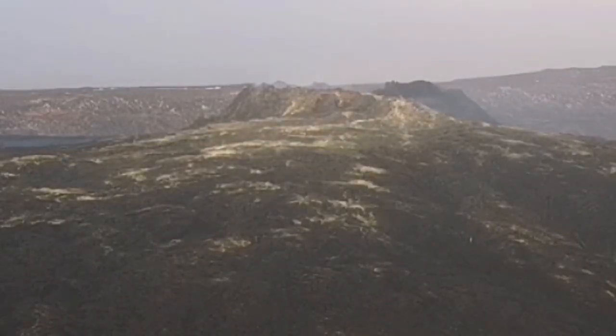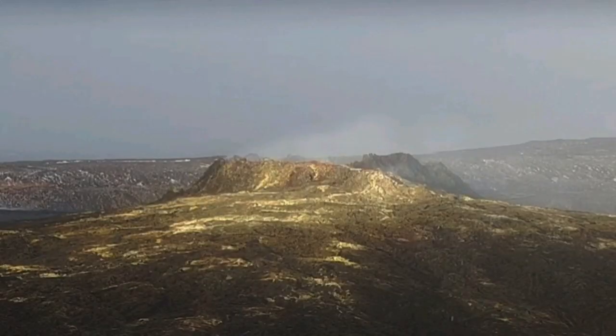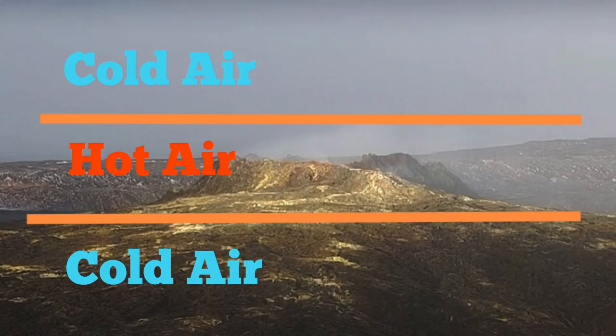I've reversed it now, you can see it even better. And this air inversion is very strange — that means the lava field around this area is cold now. That's interesting. You don't see fumaroles anymore there. We have cold air gathering around the lava field.